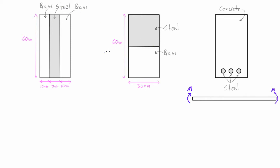And that's going to change the way that we solve these problems. So for example, the modulus of elasticity of steel would be 200 gigapascals, and the modulus of elasticity of brass would be 100 gigapascals.